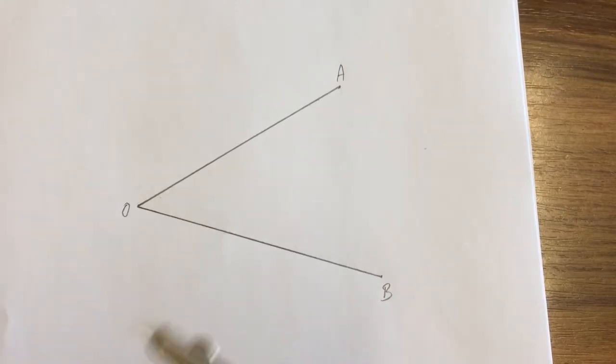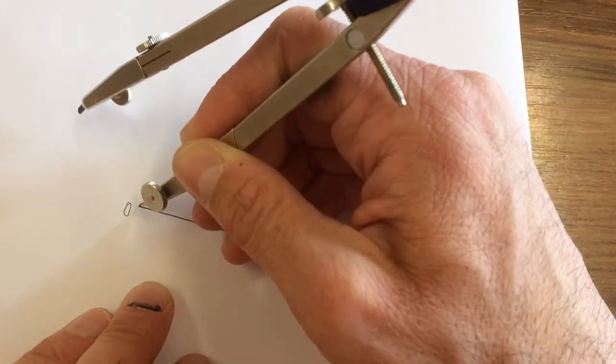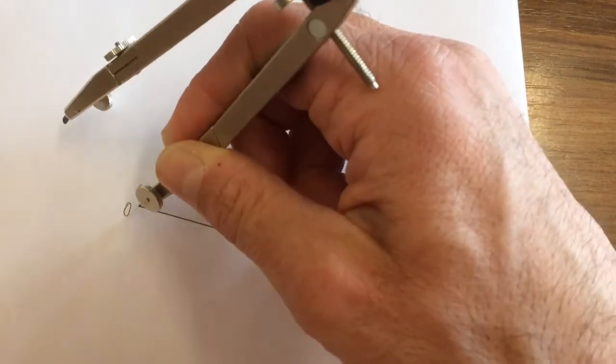The first stage is to get your compass and put your compass point at point O, where the two lines meet.